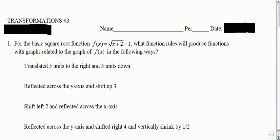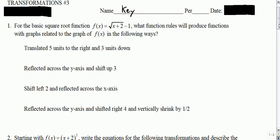All right, here's a key for some more transformations work. For the basic square root function, what function rules will produce functions with graphs related to f in the following ways? You're just trying to write the function. You're going to take f and move it five units to the right and three units down. Five units to the right says replace x with x minus five, and then three units down.